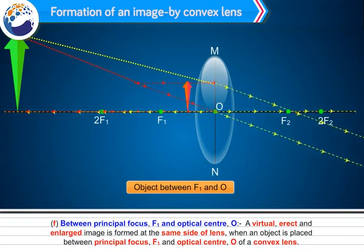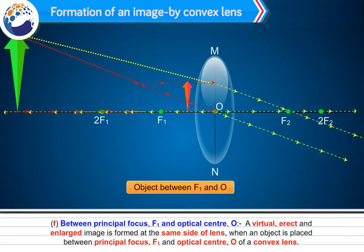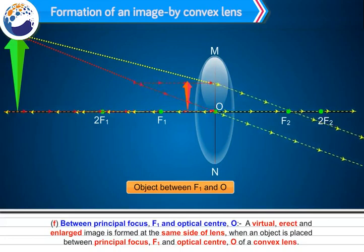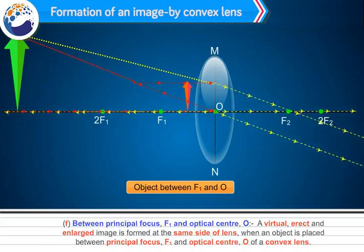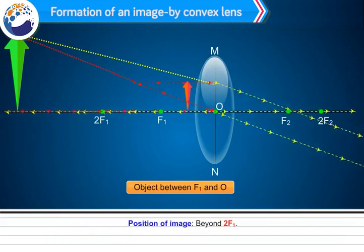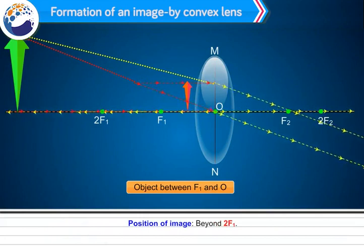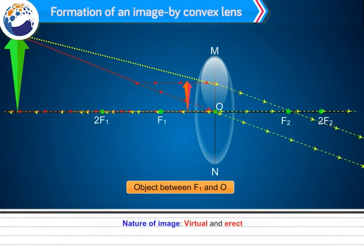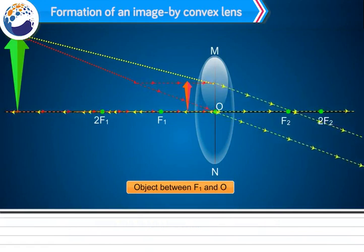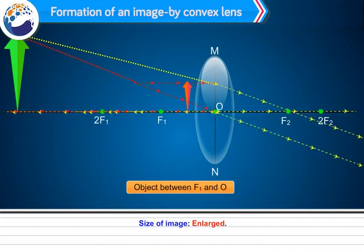When the object is placed between the principal focus F1 and the optical centre O of a convex lens, a virtual and erect image is formed beyond 2f1, and the size of the image is enlarged.